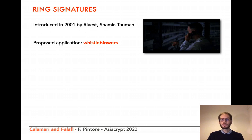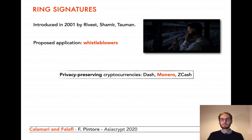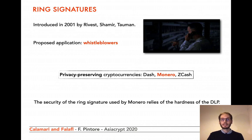Ring signatures have recently found other practical applications in electronic voting systems and in cryptocurrencies. Recently, cryptocurrencies providing privacy by default have been proposed — among them we can mention Dash, Monero, and Zcash. Monero uses ring signatures to achieve privacy. Unfortunately, the security of the ring signatures used in Monero relies on the hardness of the discrete logarithm problem, which can be solved in quantum polynomial time. Given the threat represented by the realization of quantum computers, there is the need to identify quantum-resistant replacements.